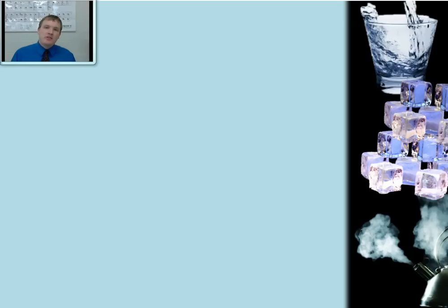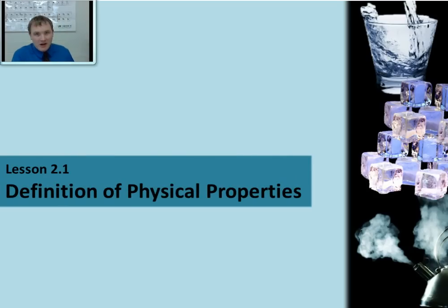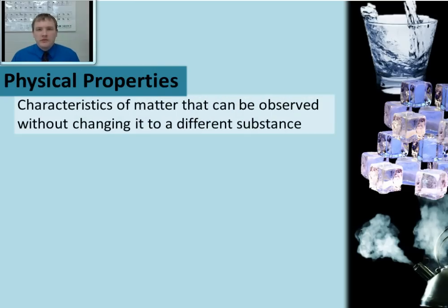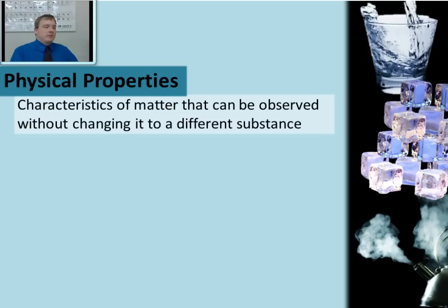In this lesson, we're going to learn why some of those properties are called physical properties and why some are called chemical properties. And as we learn that, you're going to understand just a little bit deeper what physical science is all about. Let's start with a definition of a physical property. Simply put, a physical property is something that you can observe about a substance without actually changing the substance into an entirely new substance. A physical change is when you change some characteristic, some property of the substance without changing it to a new substance.